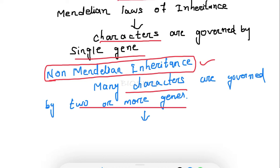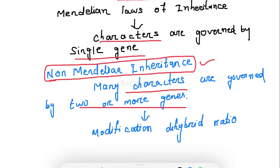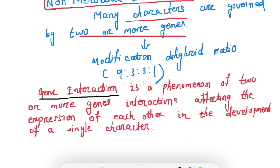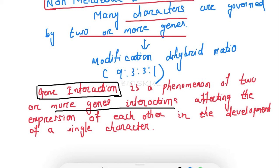Gene interaction leads to modification of the typical dihybrid ratio. The phenotypic dihybrid ratio is 9:3:3:1. Gene interaction is defined as a phenomenon where two or more genes interact with each other in such a way that they affect the expression of each other in the development of a single character in an organism.